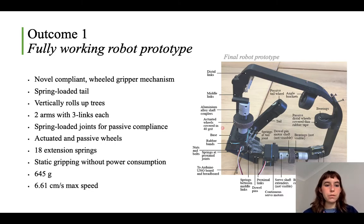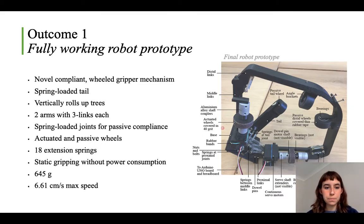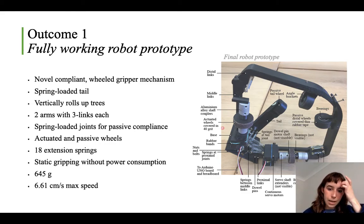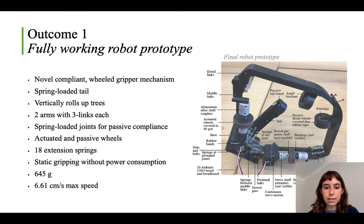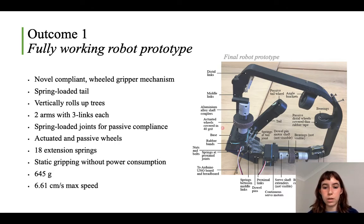The first outcome of the project was the fully working robot prototype. It has a novel compliant wheeled gripper mechanism and a spring-loaded tail, and uses those to vertically roll up trees. It's comprised of two arms, each with three links connected by spring-loaded joints, giving the robot the ability to passively comply to the surface it's climbing. There are two actuated wheels covered in sandpaper, three passive wheels, and 18 extension springs which allow static gripping without power consumption. Overall the robot weighs 645 grams and can roll up trees at a maximum speed of 6.61 centimeters per second.